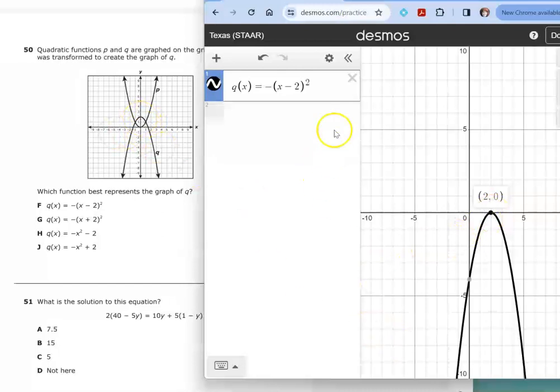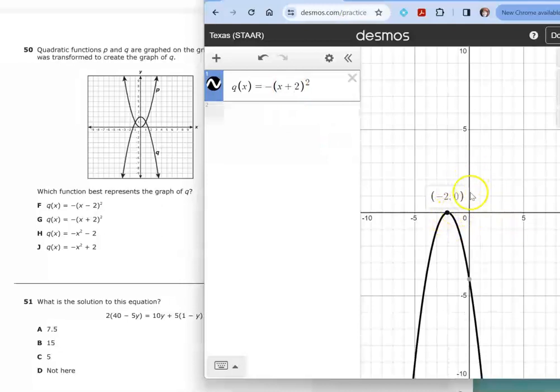And it's wrong too for the same reason. The vertex will be on the x-axis not at 0 where it's supposed to be at 0, 2. It'll be at negative 2, 0. So that one does not work either. So let's go ahead and try answer choice H.